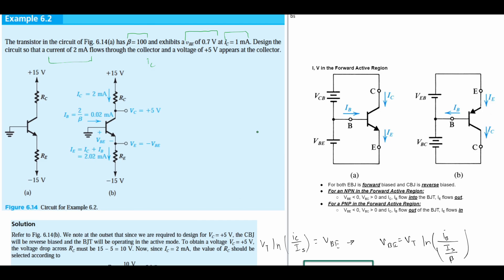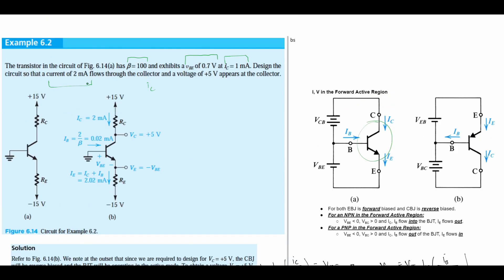Looking at this problem, it's going to be an NPN transistor. We know this because the arrow is pointing away from the base. If we need to design the circuit so that 2 milliamps flows out and we have 5 volts at the collector, we need to find some resistance.